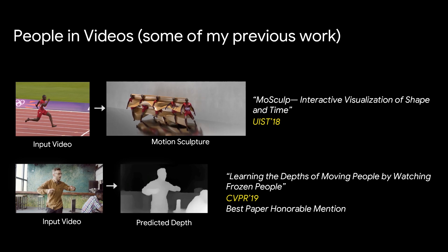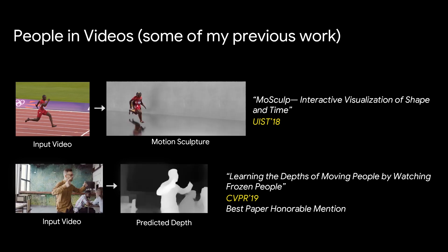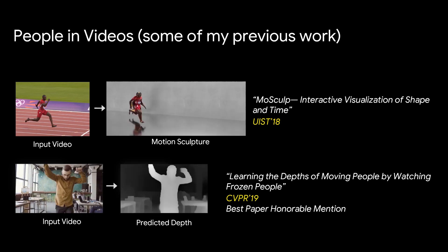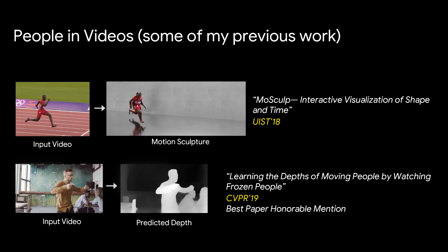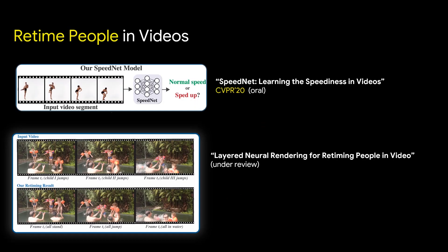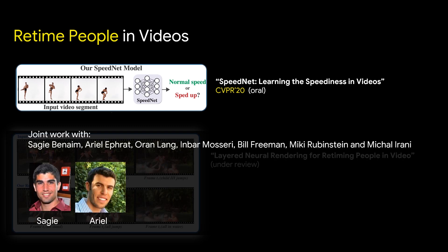A motion sculpture is a three-dimensional visualization of the structure swept by the runner as he moves in space. In another work, we predict dense depth maps for every frame in the video in cases where both the camera and the people in the scene are naturally moving. I'm going to tell you about two new works — both dealing with people in videos but focusing on retiming. I'll start with SpeedNet, which is presented at this CVPR, a joint work with Sagui and Ariel who made this project possible.